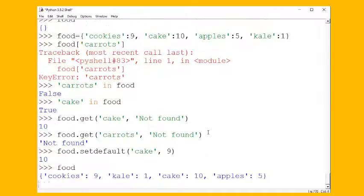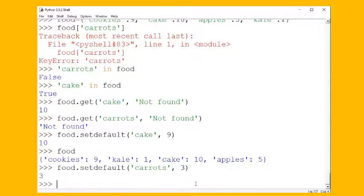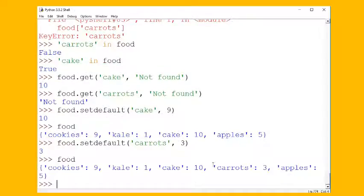But what if we called setdefault with carrots? Well, I'd say carrots rank maybe three, they're not too yucky but they're still vegetables. So I'm gonna say go ahead and look for carrots, if you find it return the value, if you don't find it add it to my dictionary with this as the key and three as the value, and then it returns the value of three. So let's look at our dictionary, and we notice that it has been modified, it has been changed, and we've added that new key-value pair.